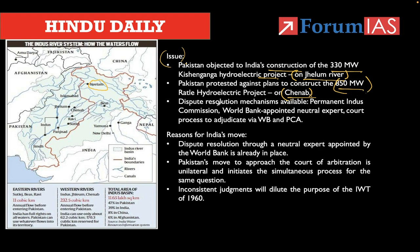Pakistan has been raising the issue, but instead of approaching the neutral expert or the Permanent Indus Commission, Pakistan has been approaching the Permanent Court of Arbitration, which handles dispute settlement for international issues between countries and is located in The Hague. The dispute resolution mechanism is already available under the Indus Water Treaty 1960 — that is the Permanent Indus Commission. Because of the Permanent Indus Commission, the 1960 Indus Water Treaty has been successful in its implementation. The World Bank has also appointed the neutral expert. But these days Pakistan has been taking issues to the Permanent Court of Arbitration rather than solving disputes through the windows in Indus Water Treaty.